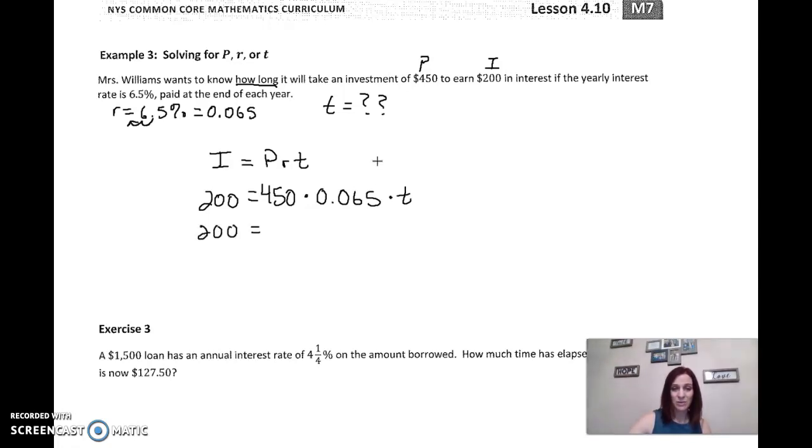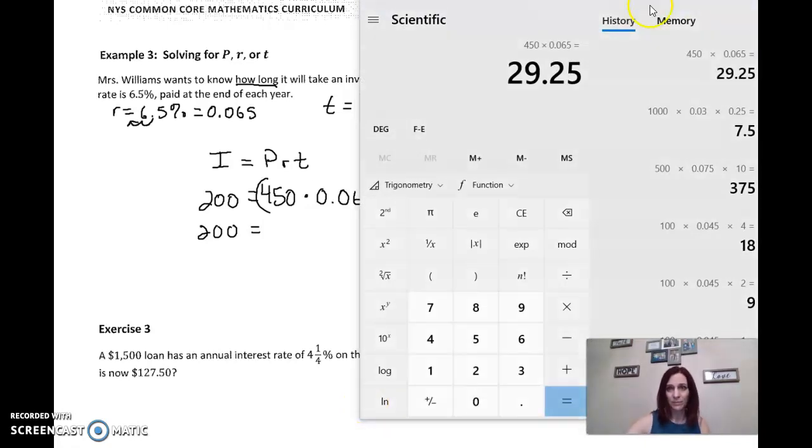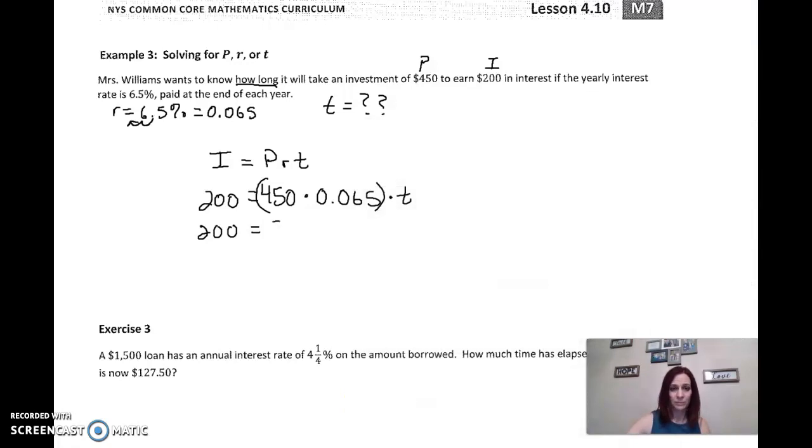So now we simplify and solve this. 200 equals, I can take this 450 times 0.065 here, and get 29.25 times T. What are we solving for? We're solving for T here. I want T all by itself on this side of the equal sign. So I have to get rid of this 29.25. This is multiplying. We undo multiplying with dividing. So I'm going to divide both sides by 29.25. That cancels out.